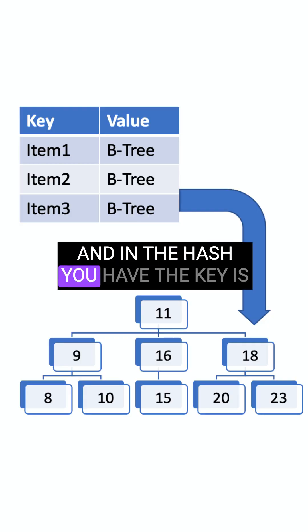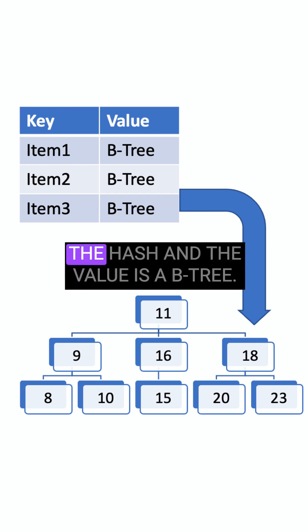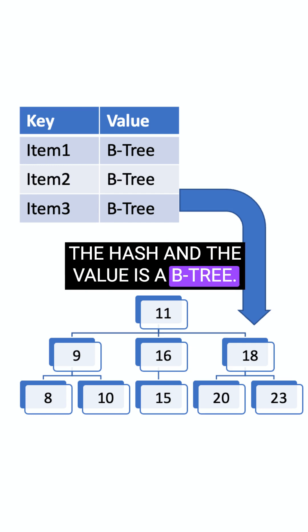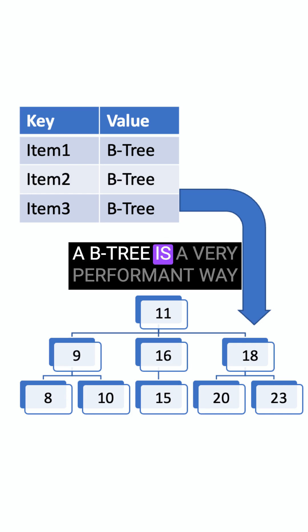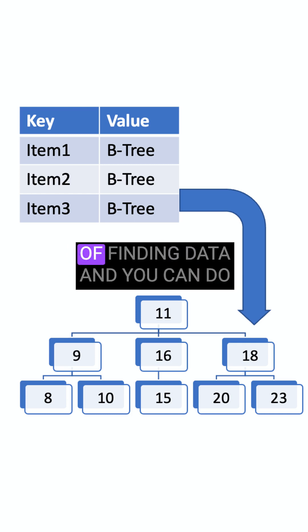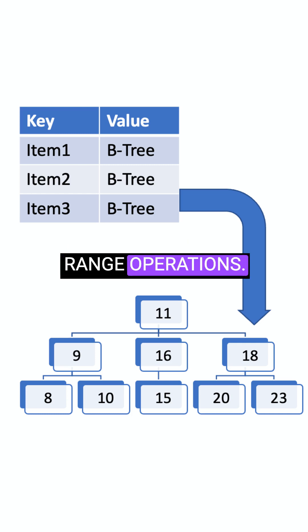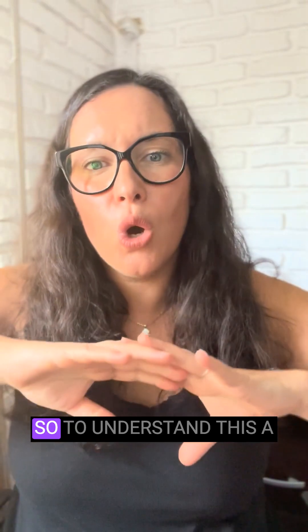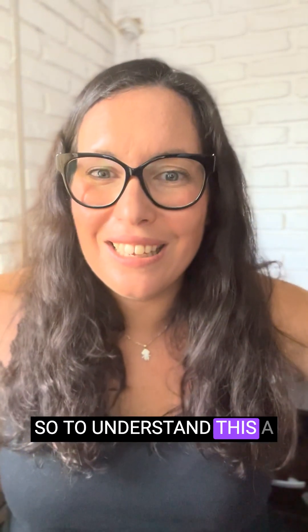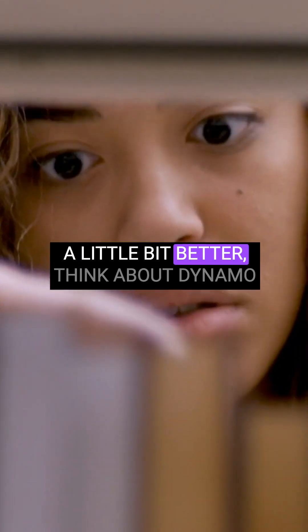A bit tree is a very performant way of finding data, and you can do range operations. To understand this a little bit better, think about Dynamo as a bookshelf full of dictionaries — dictionaries in each language.